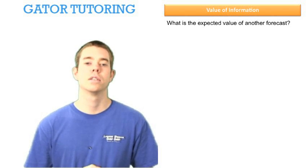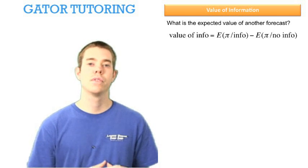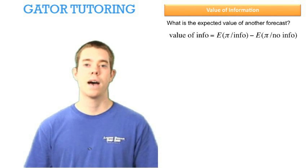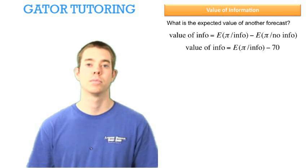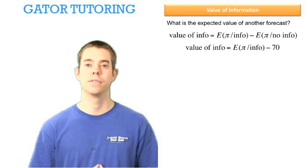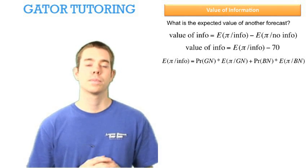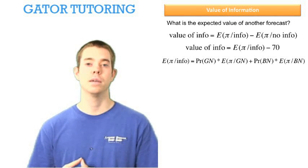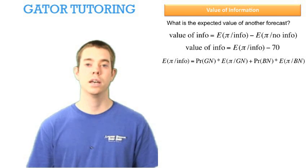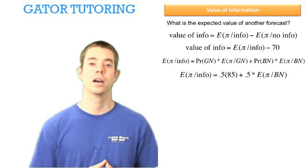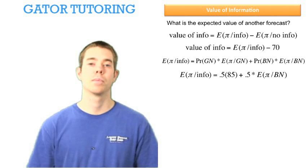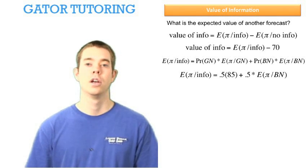The next question asks: what is the expected value of another forecast? The value of information equals expected profit given information minus expected profit with no information. They've already told us that without information we expect to make $70. The expected profit given information equals the probability of good news (50%) times expected profit given good news ($85), plus the probability of bad news (50%) times expected profit given bad news — the only component we still need to solve for.